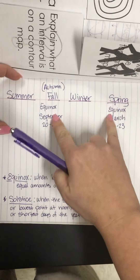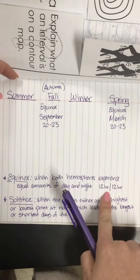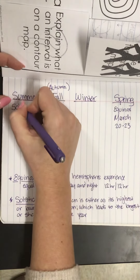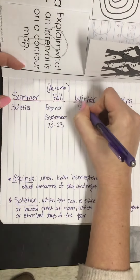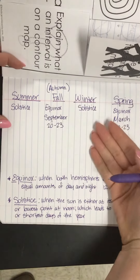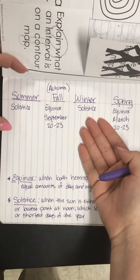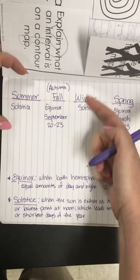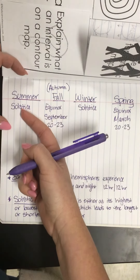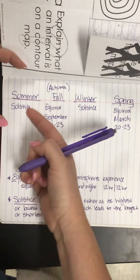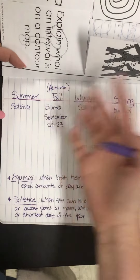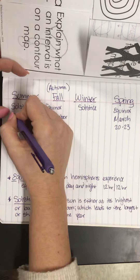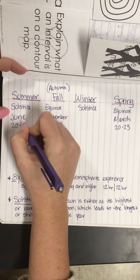Spring and fall are equinoxes — 12 hours of day, 12 hours of night, equal. Summer and winter are our solstices. We're currently in winter, and you might notice it's dark when you go to work and dark again when you get home — less daylight. In summer, the Sun comes through the window early and it stays light late into the evening. The summer solstice is our longest day of the year and happens in June, sometime between the 20th and the 23rd.